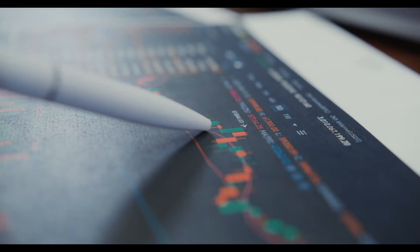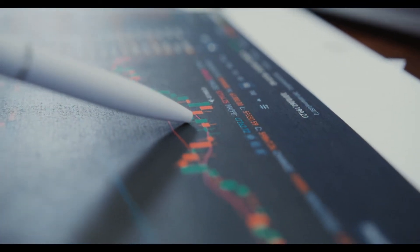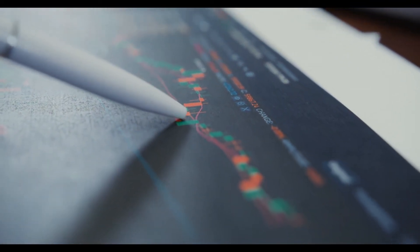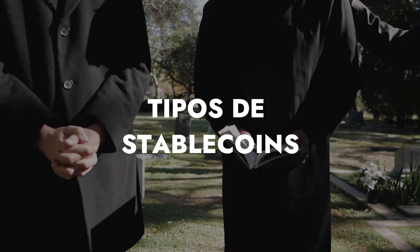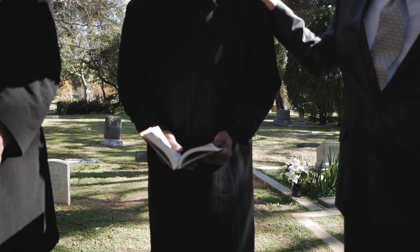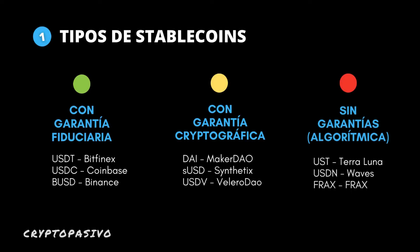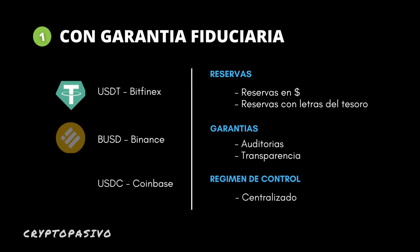He querido recopilar toda la información que he sacado esta semana para traerla aquí y que todos los que queráis podáis aprender de ello. Os cuento los tipos de stablecoins que hay. Podríamos separar las stablecoins en tres tipos: las que nos ofrecen una garantía fiduciaria, las que no nos ofrecen garantías fiduciarias pero sí criptográficas, y aquellas que no nos ofrecen absolutamente ningún tipo de garantía pero sí tienen algún tipo de algoritmo que dicen protege el PEC, las llamadas algorítmicas.